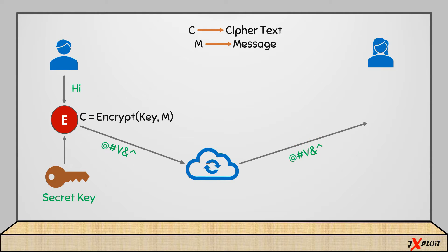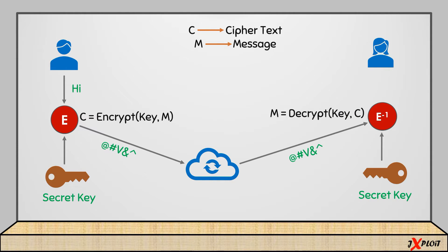The ciphertext is sent over the untrusted medium — in this case, the internet. At the receiving end, the ciphertext is sent for the decryption process. The same key is used to decrypt the ciphertext, and once the decryption algorithm is applied, the original message 'hi' is retrieved back. After decryption, the message is delivered to Sarah.